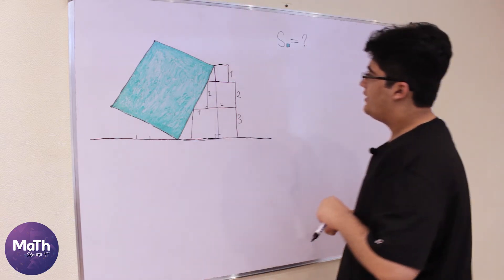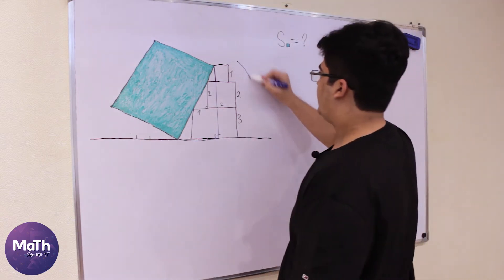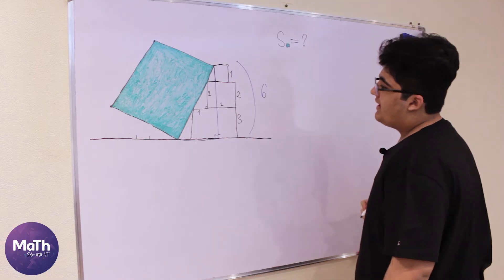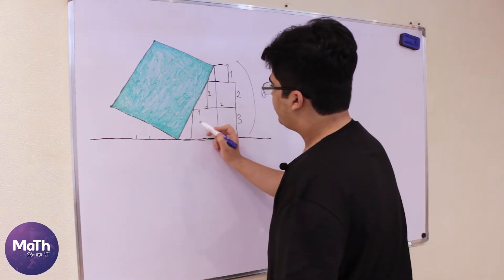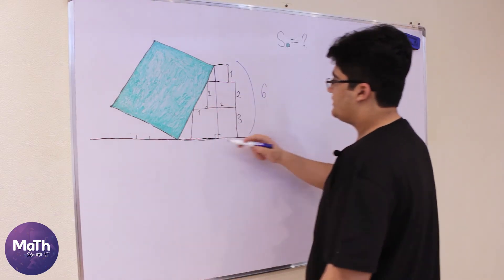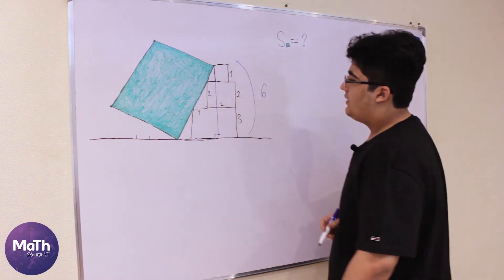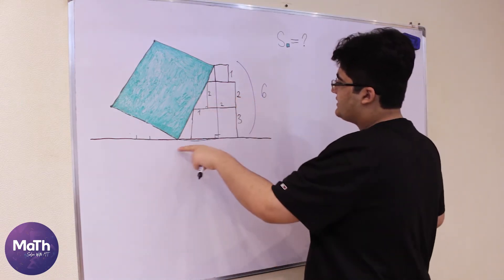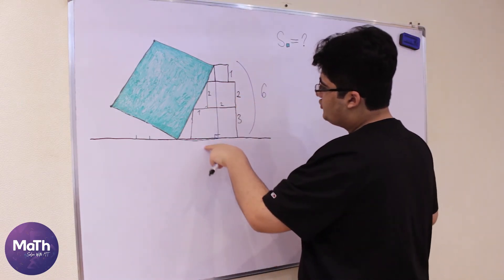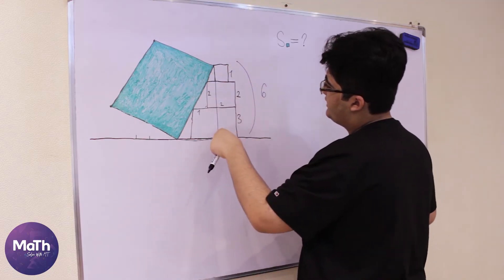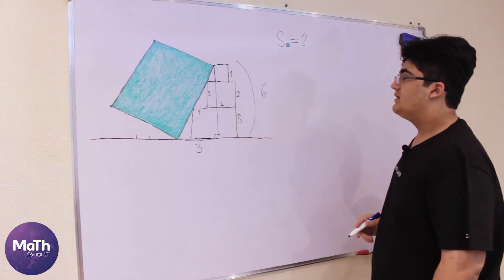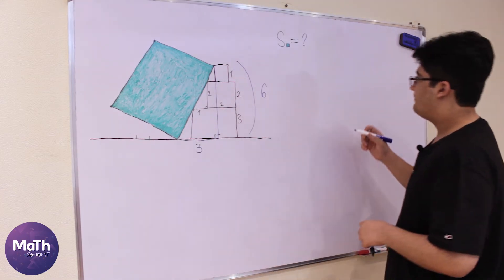We know that this side will be equal to 6 because 1 plus 2 plus 3 gives us 6. If this one is similar to this, then we know that this side must be 2 times less than this side. So if this is 6, this will be 3.